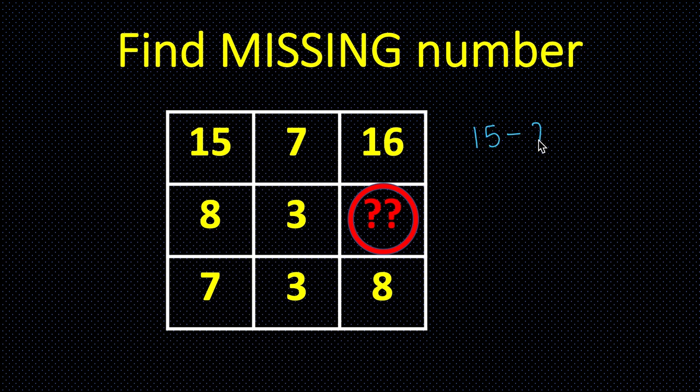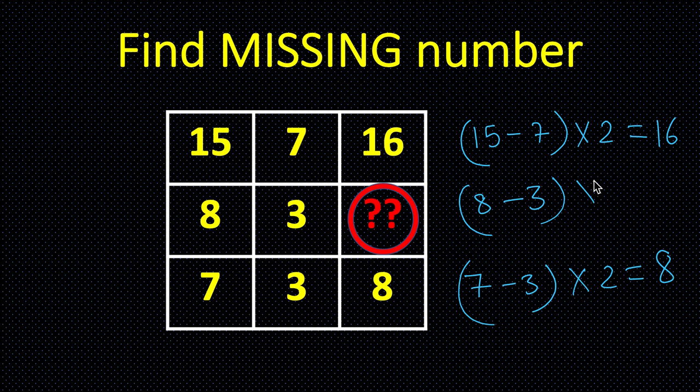So (15 - 7) × 2 = 16, and in this row, (7 - 3) × 2 = 8. So here we will do the same thing: (8 - 3) × 2. This is 5 × 2 = 10.